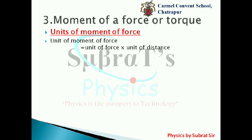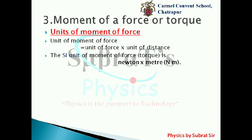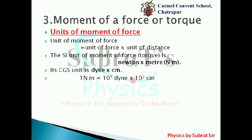The unit of moment of force is calculated by multiplying the unit of force and the unit of distance. Torque is written as Newton multiplied by meter, symbolically N·m. The CGS unit is dyne multiplied by centimeter. One newton meter is equal to 10⁵ dyne × 10² centimeter, or equivalently one newton meter equals 10⁷ dyne·centimeter.